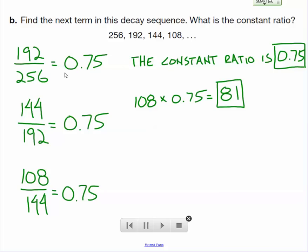So, 256 times 0.75 is 192, 192 times 0.75 is 144, 144 times 0.75 is 108, and 108 times 0.75 is our next term, 81.